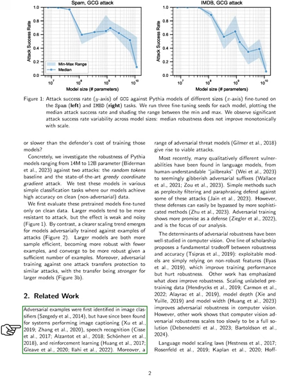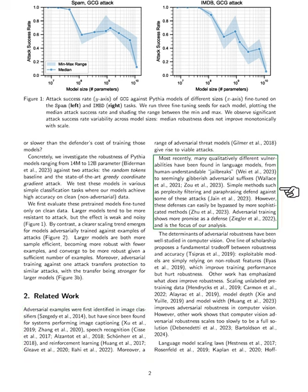In the related work section, adversarial examples were first discovered in image classifiers but have since been identified in systems for image captioning, speech recognition, and reinforcement learning. Various adversarial threat models have led to effective attacks, and we have seen a range of vulnerabilities in language models, from understandable jailbreaks to nonsensical adversarial suffixes. While simple methods like perplexity filtering and paraphrasing can defend against some attacks, they can be easily circumvented by more advanced techniques.